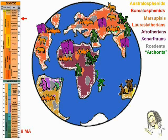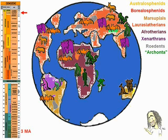5 million years ago, the tailless apes vanished from the Middle East, and appears the first known ancestor of the human lineage in Africa. 3 million years ago, North and South Americas joined each other again after more than 120 million years separated. This is the Great American Interchange, where the North fauna goes to the South and the South fauna goes to the North, through the Isthmus of Panama.